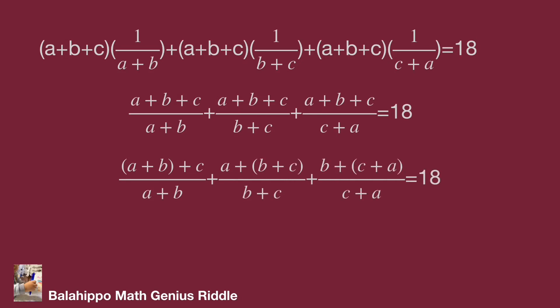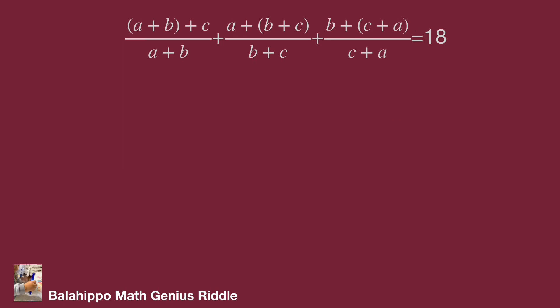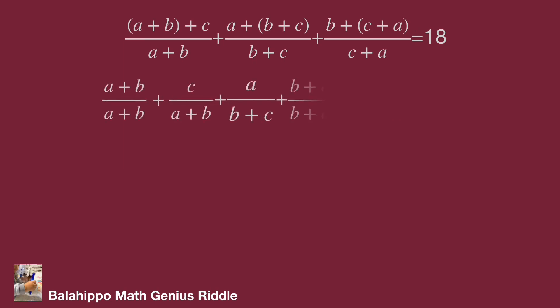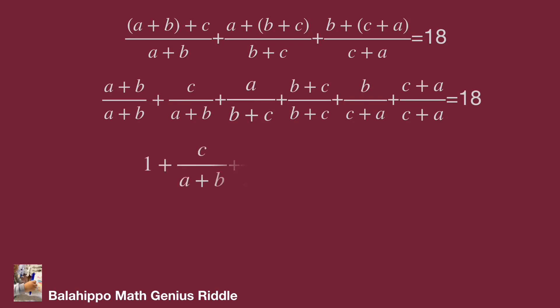Adjusting each item to make it simpler: we have (a plus b) in item 1, (b plus c) in item 2, and (c plus a) in item 3. This gives us six items in the equation. We have (a plus b) over (a plus b), (b plus c) over (b plus c), and (c plus a) over (c plus a) — each equal to 1. So the equation becomes 1 plus c over (a plus b) plus 1 plus a over (b plus c) plus 1 plus b over (c plus a) equal to 18.